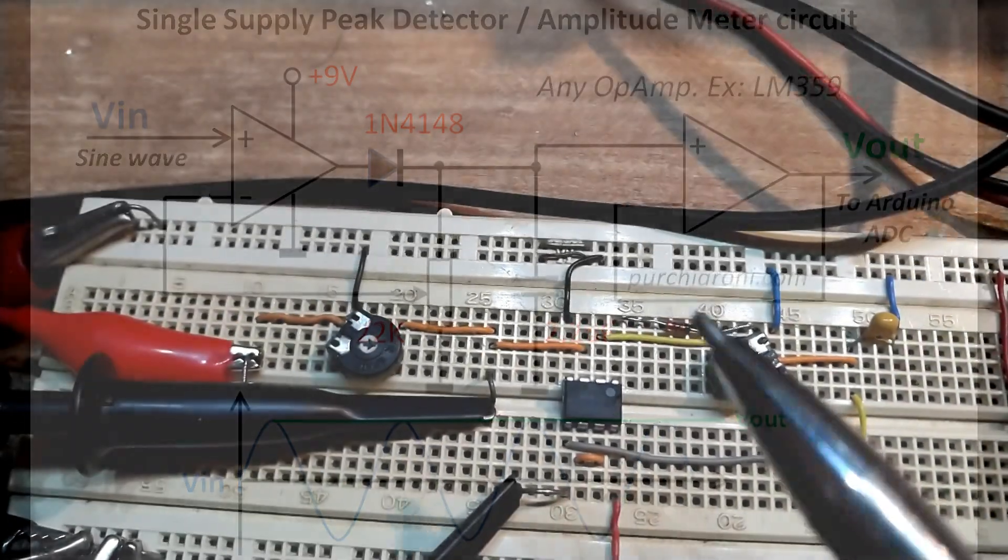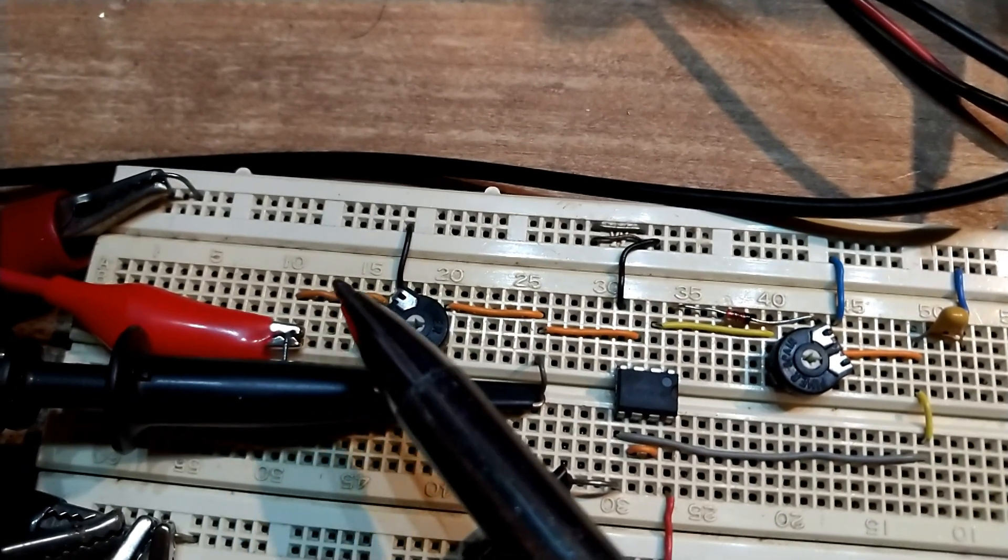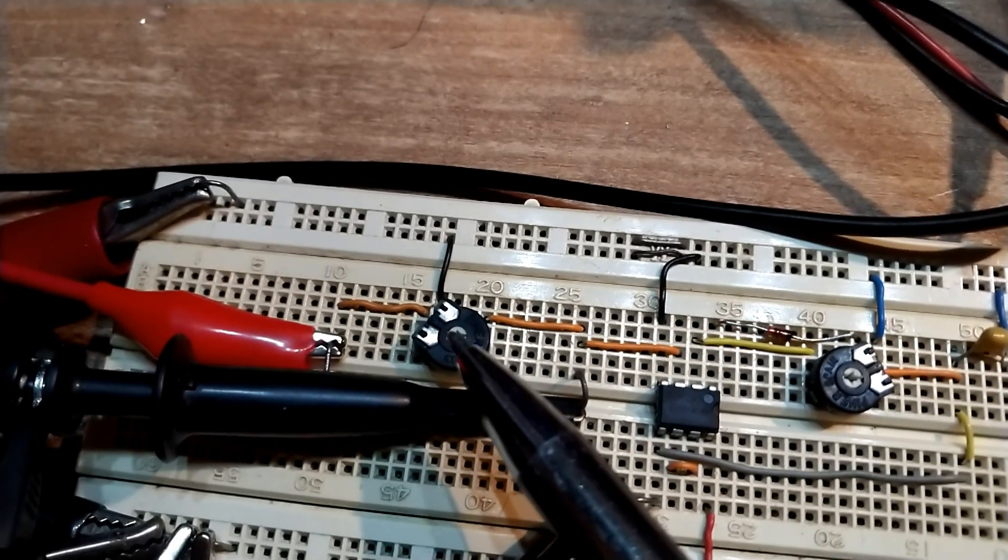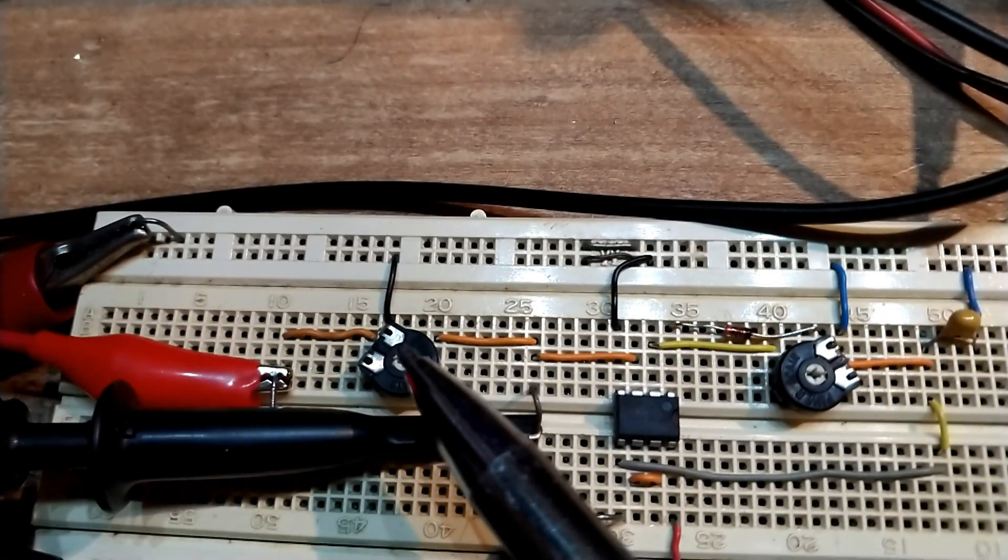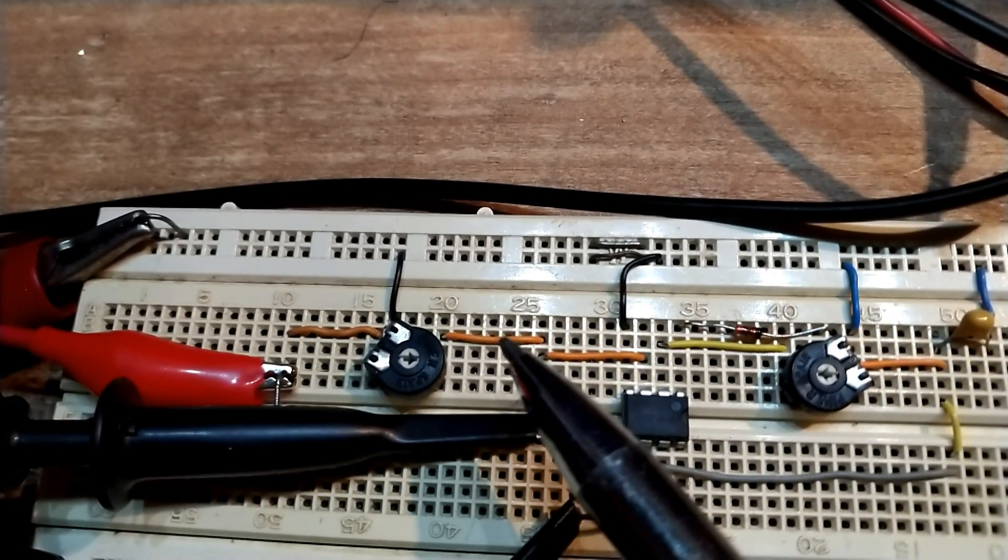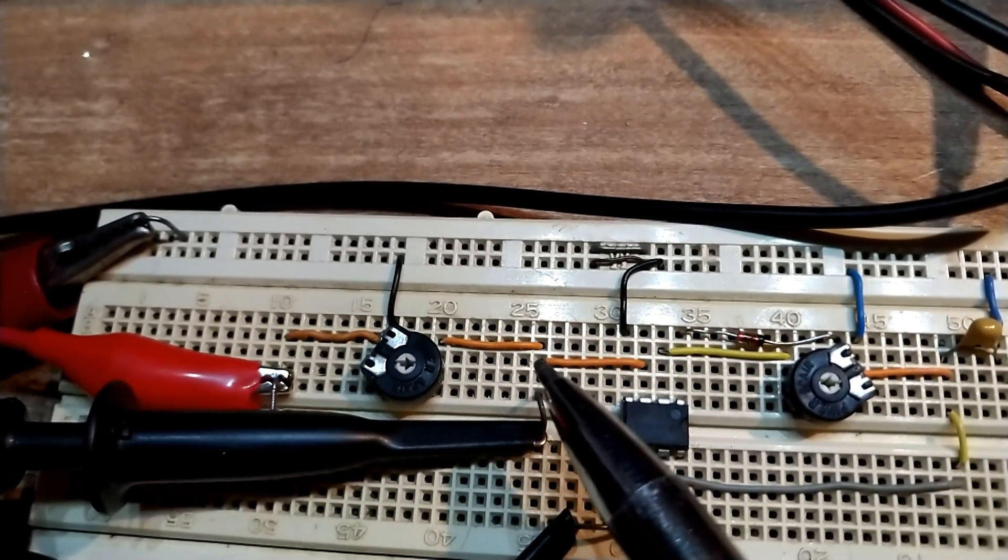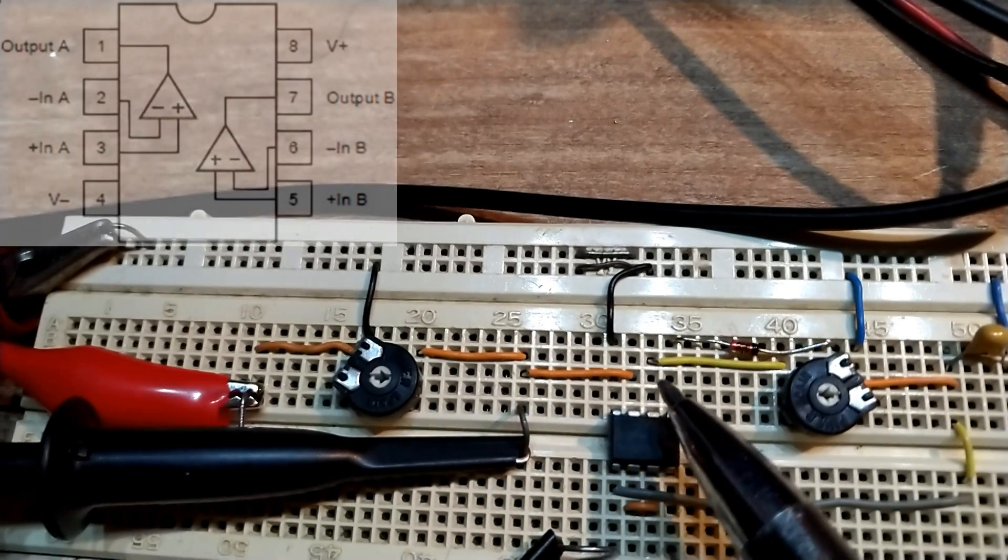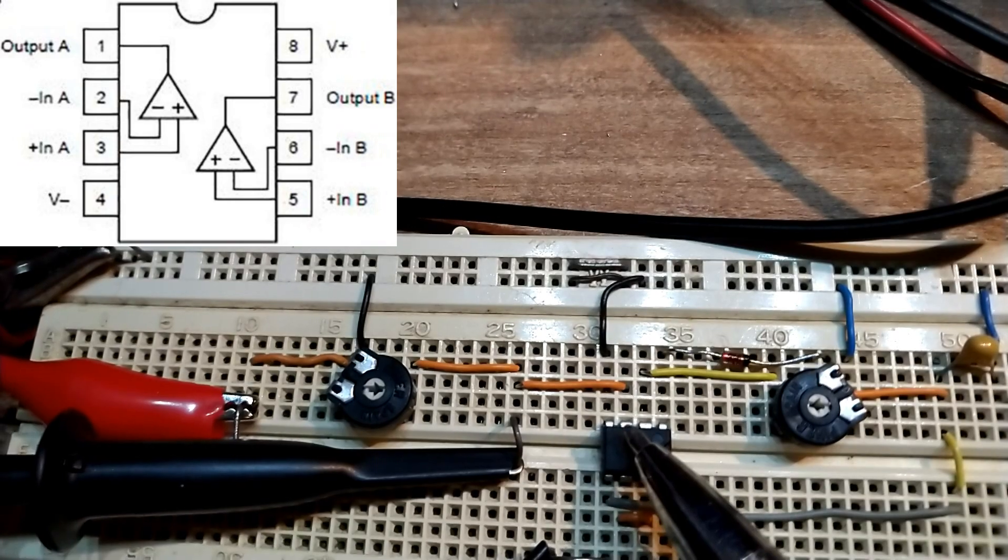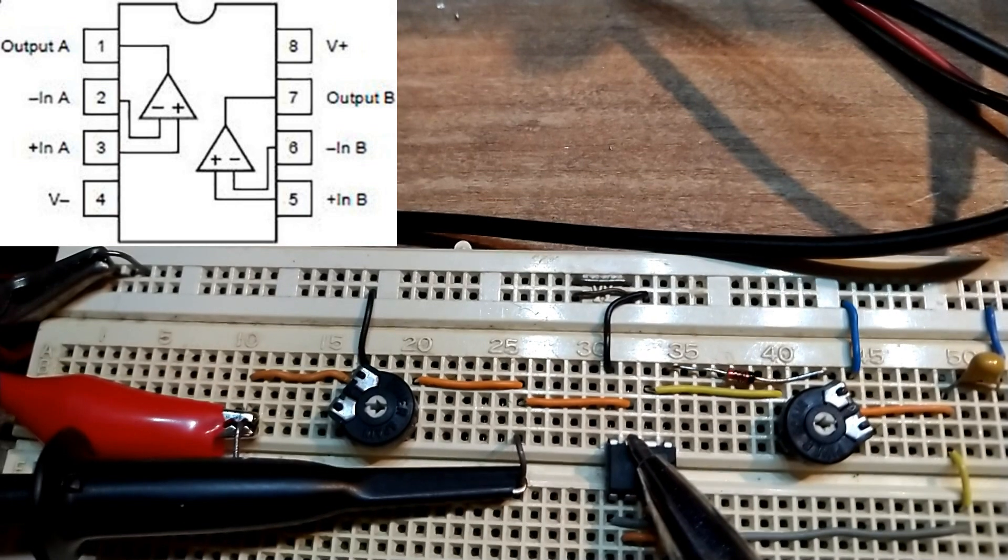This is our circuit. Here I applied the signal that goes to the first trimmer that is not depicted in our circuit, but I use it just to regulate the amplitude of the voltage. Then I measure it with oscilloscope probe and I send it to the positive input of this amplifier. This is LM358.